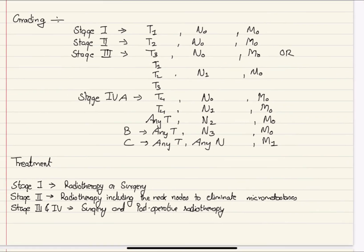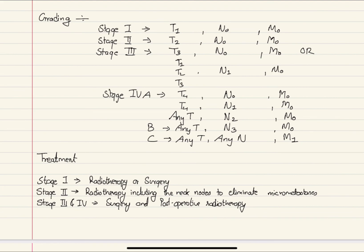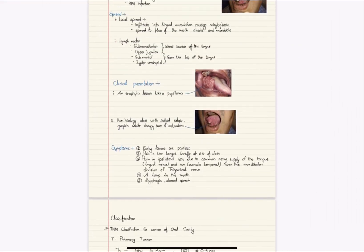The primary aim of treatment is to treat the primary tumor in the tongue, control the neck disease, and preserve the function of the tongue as much as possible. Small or stage 1 tumors give equal results with radiotherapy or surgery. Stage 2 tumors can be treated by radiotherapy including neck nodes to eliminate micrometastasis, or by surgical excision with prophylactic neck dissection. Stage 3 and 4 tumors require combined treatment with surgery and post-operative radiotherapy, which gives better results than either modality alone.